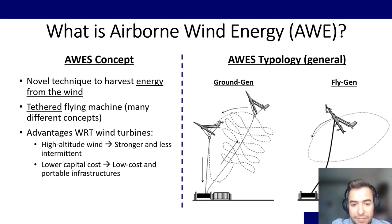The two main ones are on the right. Ground gen systems where we pull the tether to move a generator on ground and produce the power, and the fly gen systems where instead we move the wind turbines on board.